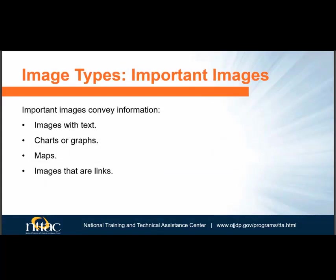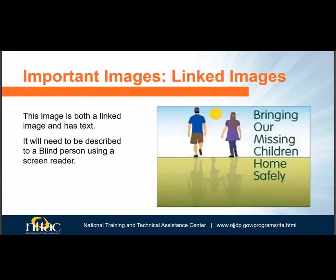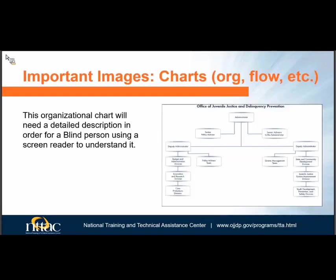Important images, on the other hand, are images that present information. A blind person using a screen reader needs to know what is in that image to have the same information as a sighted person. A linked image also has text and will need to be described to a blind user. Images of text, except for logos, are discouraged when text can be used instead. However, in the case of organizational charts, it may be necessary to use an image of text, and the image must be described in full including relationships. On the OJJDP website, an organizational chart is used and described in detail on the same page.